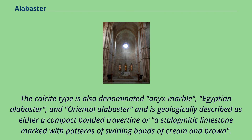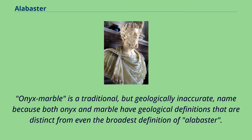The calcite type is also denominated onyx marble, Egyptian alabaster, and oriental alabaster, and is geologically described as either a compact banded travertine or a stalagmitic limestone marked with patterns of swirling bands of cream and brown. Onyx marble is a traditional, but geologically inaccurate, name because both onyx and marble have geological definitions that are distinct from even the broadest definition of alabaster.